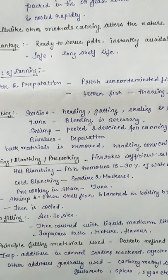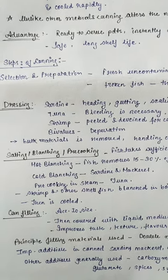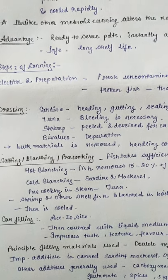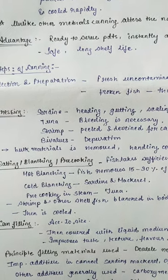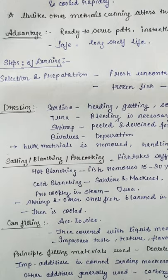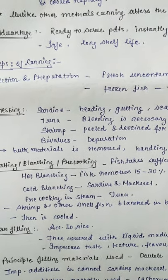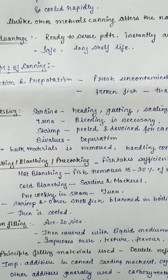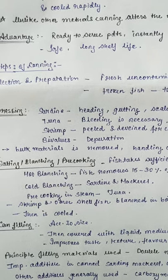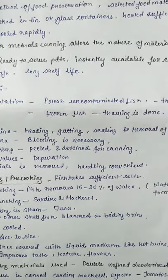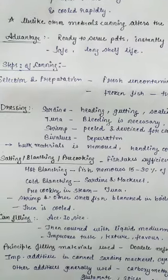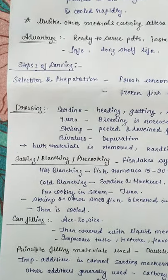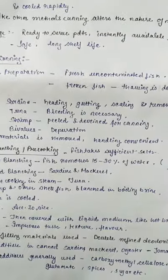Shrimp is peeled and deveined for canning. The purification method for bivalves is depuration — they are washed immediately so that unwanted material is removed. Bivalves include clam, mussel, and similar shellfish. Bulk material is removed during dressing for convenient handling.